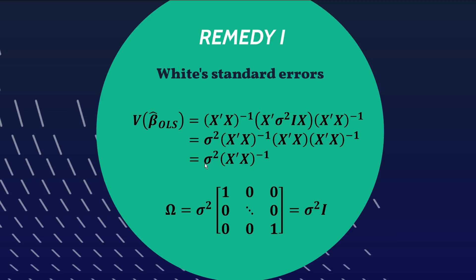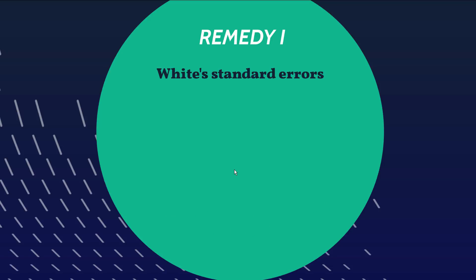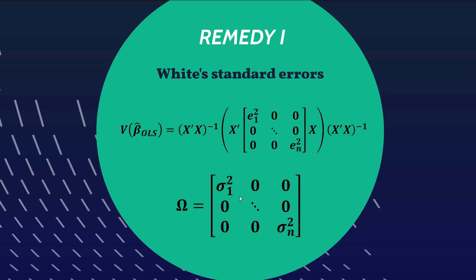That's what's happening behind the scenes in your regression output — it executes that calculation to produce the standard error for each coefficient. Now, going back: if we cannot assume constant variance, then each observation may have a different variance, shown with subscripts on the diagonal. To get White's standard errors, the initial regression is run and the residuals are estimated for each individual observation — giving e-squared for observation 1, e-squared for observation 2, and so on up to observation N.